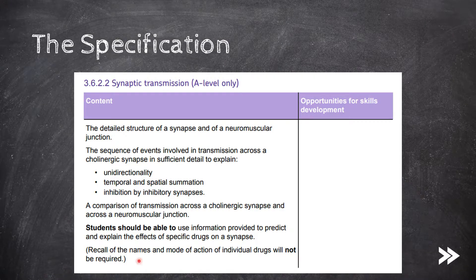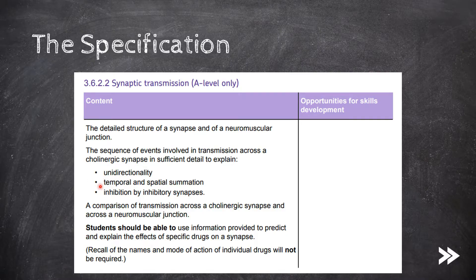Here's what we've got to know. We need to know the detailed structure of a synapse and of a neuromuscular junction. Then we need to know the sequence of events involved in transmission across a cholinergic synapse in sufficient detail to explain unidirectionality, temporal and spatial summation, and inhibition by inhibitory synapses. Finally, we need to be able to compare transmission across cholinergic synapses and neuromuscular junctions. The spec also says students should be able to use information provided to predict and explain effects of specific drugs on a synapse.